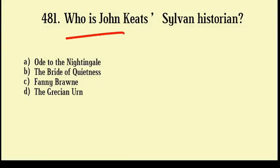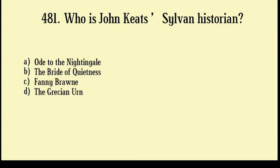Who is John Kates' Sylvan Historian? Options are: Oath to Nightingale, The Bride of Quietness, Fanny Brownie, The Gracious Earl. Correct answer: Option number D, The Gracious Earl.